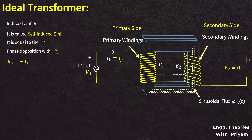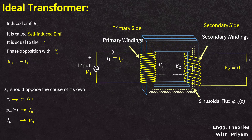Lenz's law states that the direction of current induced in a conductor by a changing magnetic field is such that the magnetic field created by the induced current opposes the initial changing magnetic field which produced it. So induced EMF e1 should oppose the cause of its own. E1 is generated due to the electromagnetic induction of the alternating flux phi_mt, which is generated due to the magnetizing current I_mu, which in turn is generated due to the supply voltage V1. So the self-induced voltage e1 opposes the supply voltage V1.